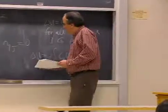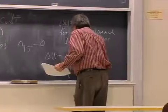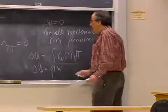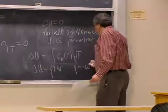So since du is equal to q plus w, and for an isothermal process this is equal to zero, therefore q is equal to minus w for an ideal gas